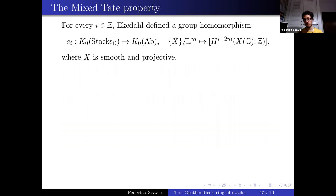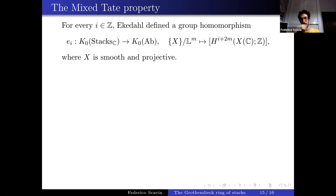It would be very nice to give a positive answer or a counterexample, but I can prove something weaker. Ekedahl defined invariants e_i: K0 Stacks → K0(Ab), where e_i(X mod L^m) = singular homology H_{i+2m}(X). One can show this is a group homomorphism using Bittner's presentation. We have: e_0 is always Z, e_1 is always trivial, and e_2 is the unramified Brauer group of the field of invariants.